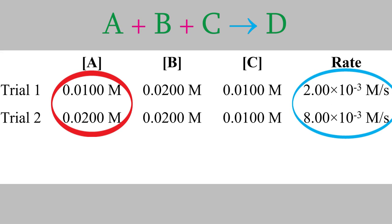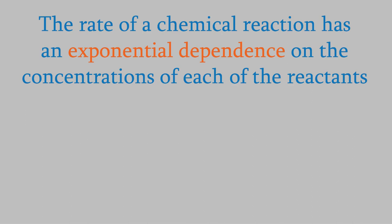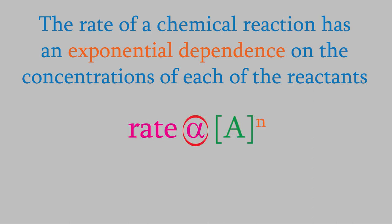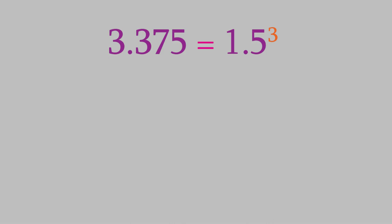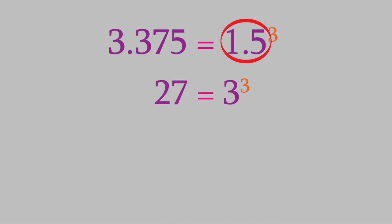How can we use that information? It turns out that the rate of a chemical reaction always has an exponential dependence on the starting concentration of each reactant. In other words, the rate is always proportional to the concentration raised to some power. We can write this using this equation — this symbol means proportional to. Here's why this is important: think about the equation 3.375 equals 1.5 raised to the third power. Now suppose we double this number — we have 3 to the third power, which is 27. But suppose we had those equations and didn't know what the power was. It's our job to figure out the exponent based on the information we've got. That could be tricky, but here's an easy way to do it.